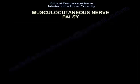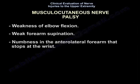In musculocutaneous nerve palsy, you'll find weakness of elbow flexion, weak forearm supination, and numbness in the anterolateral forearm that stops at the wrist.